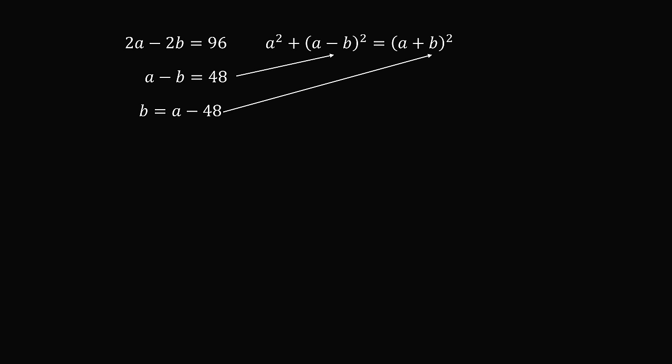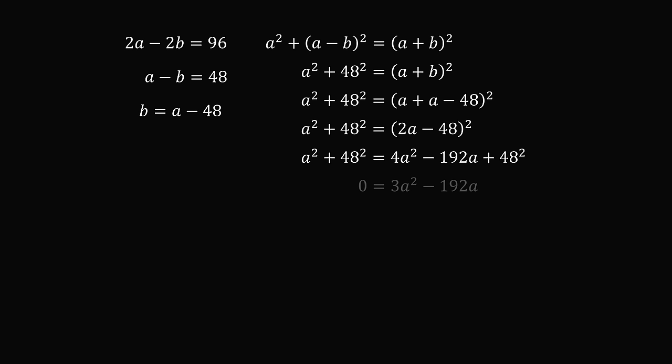So we have A squared plus 48 squared is equal to the square of A plus B. We substitute in for B. Then we simplify. We expand the binomial. We then simplify, and we can then factor out an A. Now A cannot be equal to 0. That's the radius of the large circles. So we have 3A minus 192 is equal to 0, which means A is equal to 64.